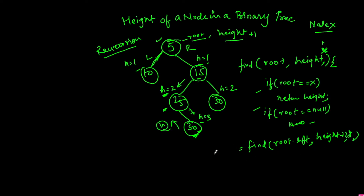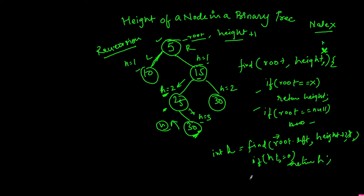This returns an int h. If h is not equal to 0, that means the recursive call to the left has returned the height — it has found the node we were looking for — so we just return h, because there's no need to go further in the right direction. Else, find root.right with height and x. So this is how we can find the height of a node in a binary tree. Let's go back to the code.